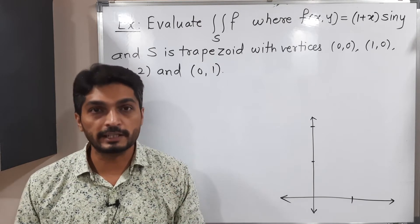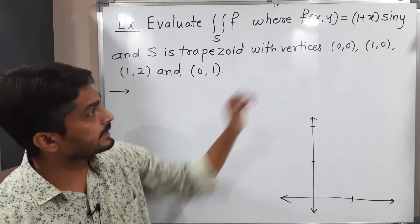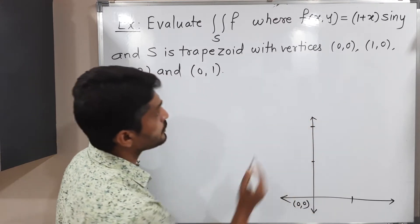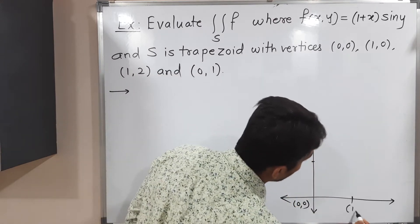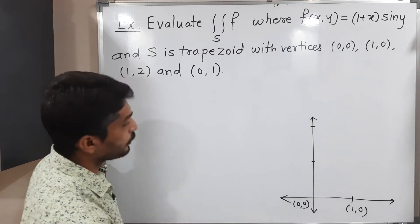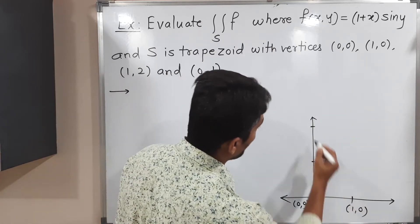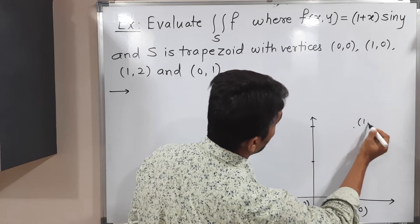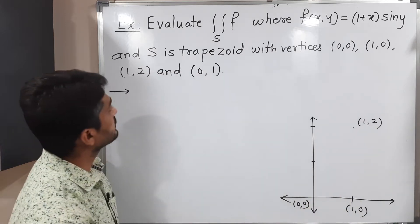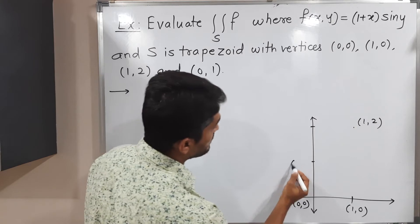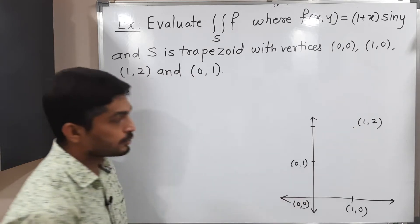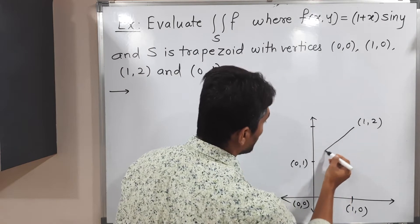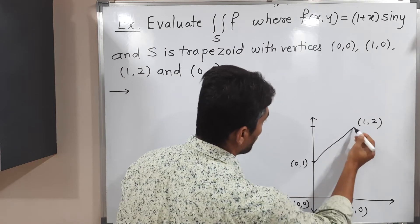The first vertex is (0,0). Next is (1,0). Next is (1,2) — on the x-axis is 1, y-axis is 2. Next is (0,1), which is on the y-axis. I am going to join these four vertices to get the trapezoid.